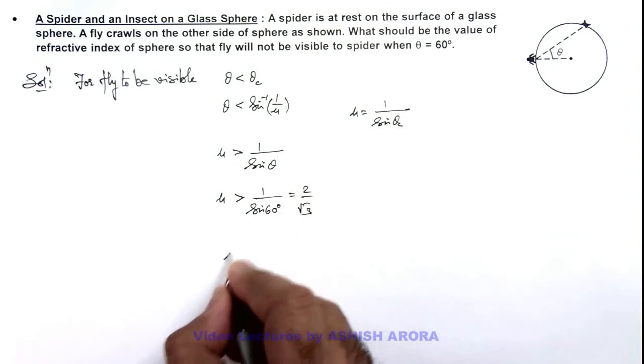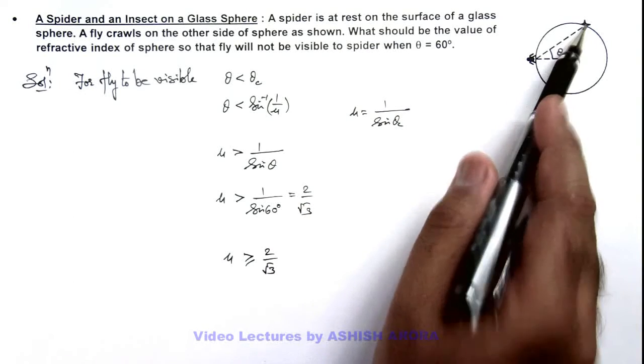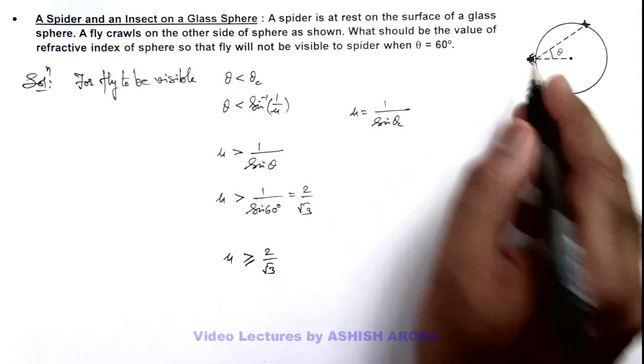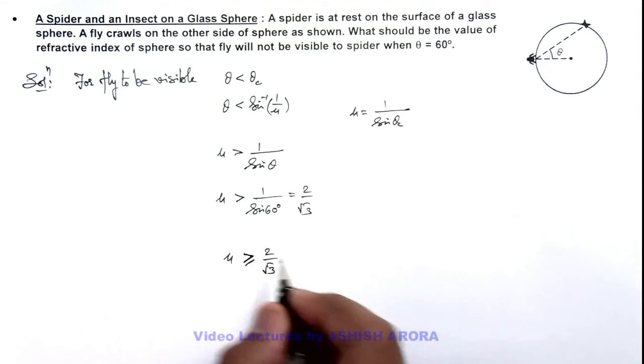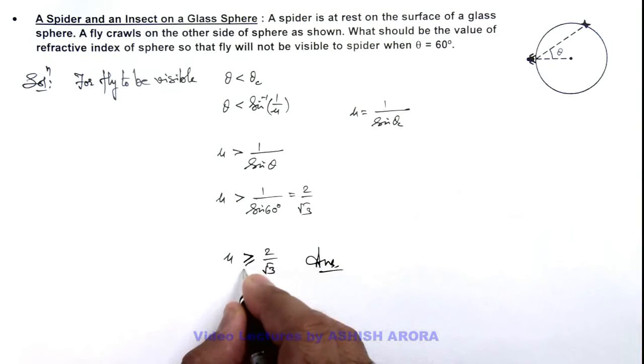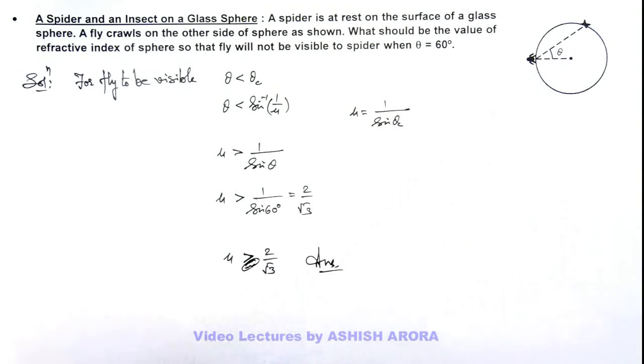So the value of μ should be greater than or equal to 2 by root 3, for which the fly will not be visible, or at equality it'll be just visible. If it is greater than 2 by root 3, then the fly will not be visible. This will be your answer, and you can eliminate the equality because for it not to be visible, it should be greater than 2 by root 3.